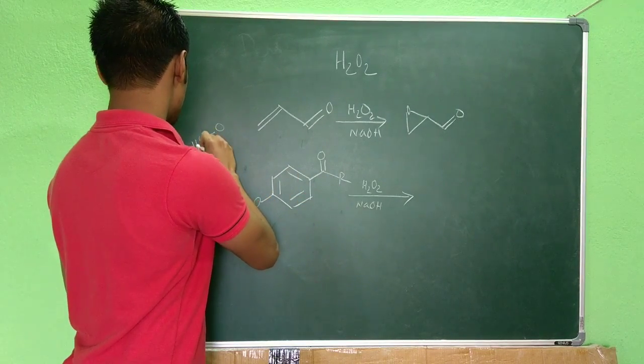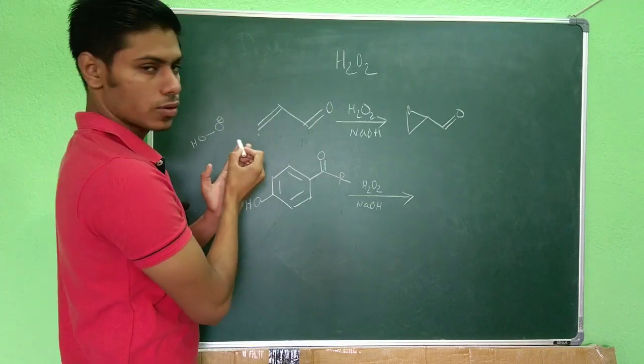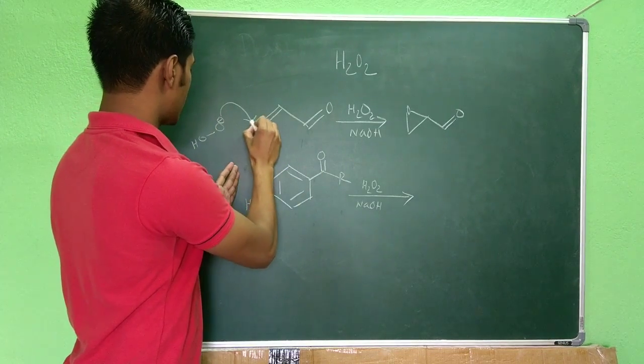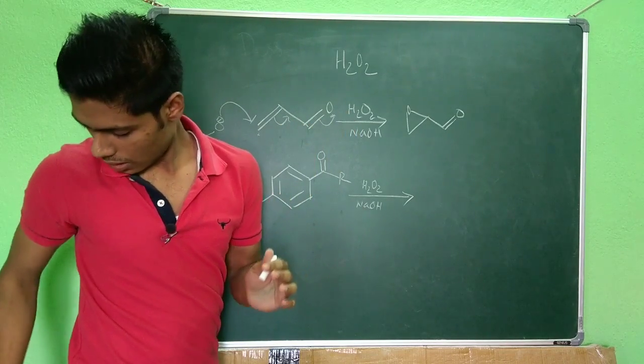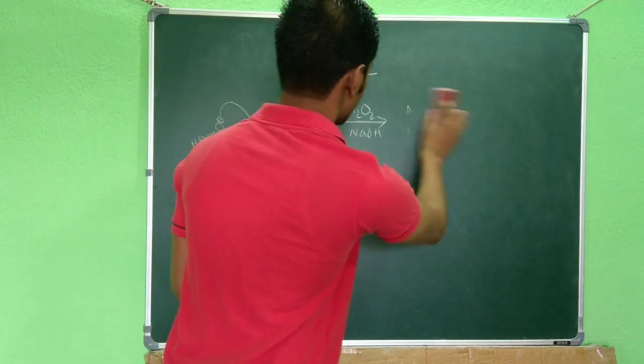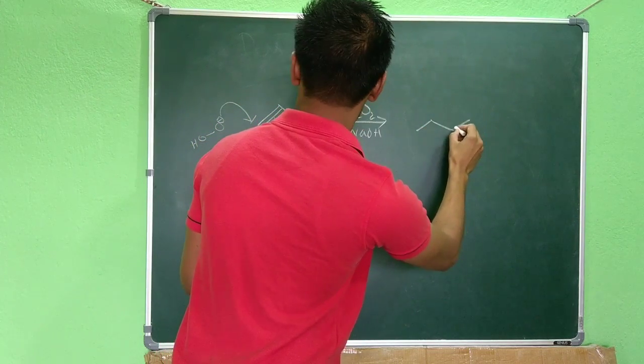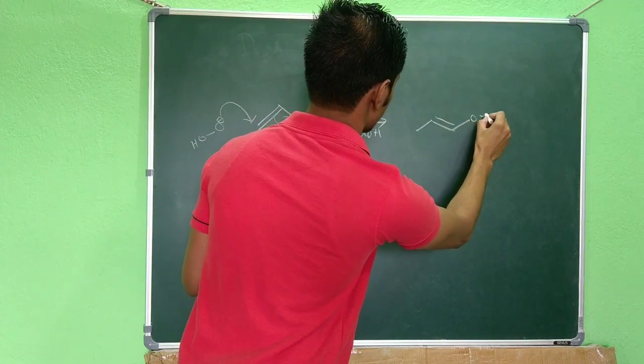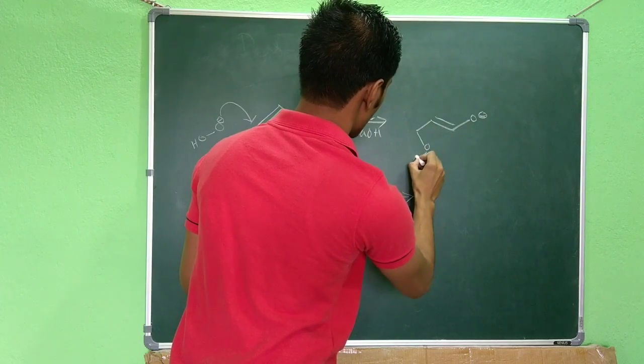So this H2O2 minus is a nucleophile and this is an electrophilic center. So it will attack here like this. Out of that, what you will get, you will get something like this: O minus, and here you will have OOH.